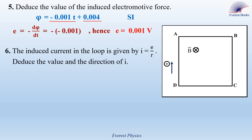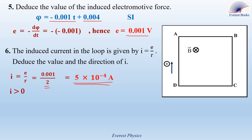Let's move to Part 6. The induced current in the loop is given by E over R. Deduce the value and the direction of I. I is equal to E over R. E is equal to 0.001 volts and R is equal to 2 ohms. Therefore, the value of the induced current is equal to 5 times 10 to the power of minus 4 amperes. This value is positive, which means that the current is positive. Look at the positive sense. The current in the loop is in the chosen positive sense, and the chosen positive sense is clockwise. Therefore, the current is clockwise.